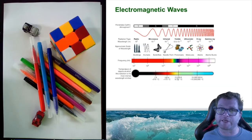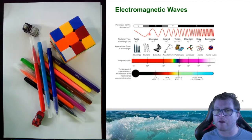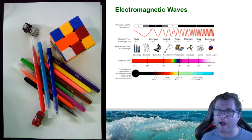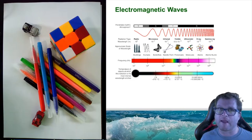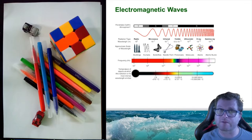Looking at electromagnetic waves in general, there is a large spectrum starting at radio waves, which have a long wavelength or low frequency, and moving up to very high frequency or small wavelengths of gamma radiation and X-rays. There is also a visible part of the spectrum — the light that we see around us. Everything we see falls within the visible region of the spectrum.